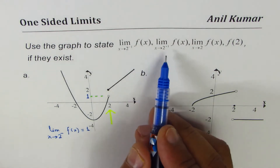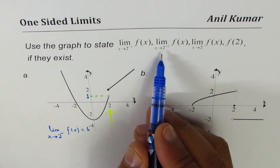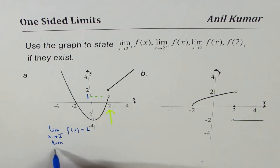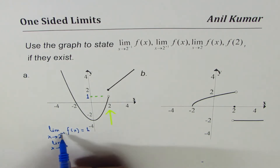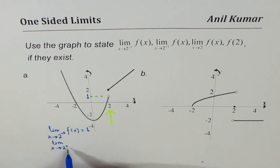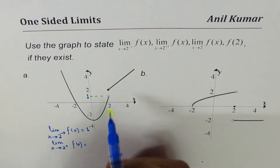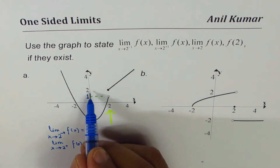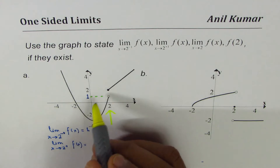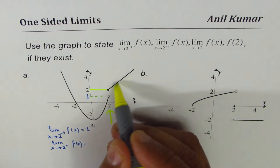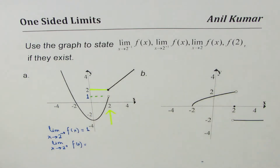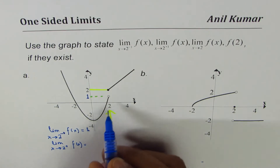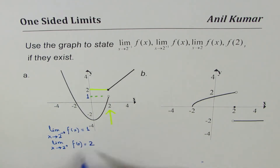Now let's try to find the limit when x approaches 2 from the right side — that is 2 plus. If you are approaching from the right side, you are going to hit this straight line, and you will reach a value which is 2. So the limit for the right side approaching 2 will be 2.